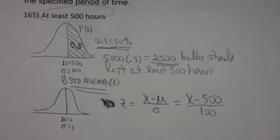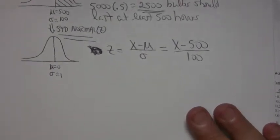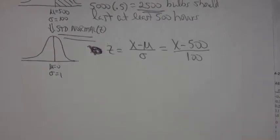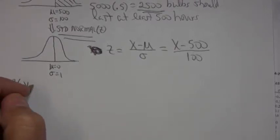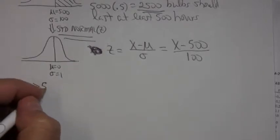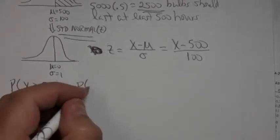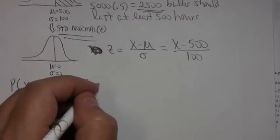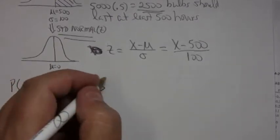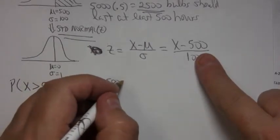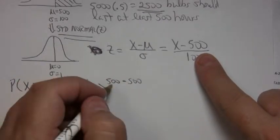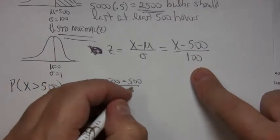So what that tells me is, after doing all this work, is that the probability that the original x variable lasts more than 500 hours is the same as the probability that the standard normal lasts 500 minus the mean, which is 500, over the standard deviation of 100.